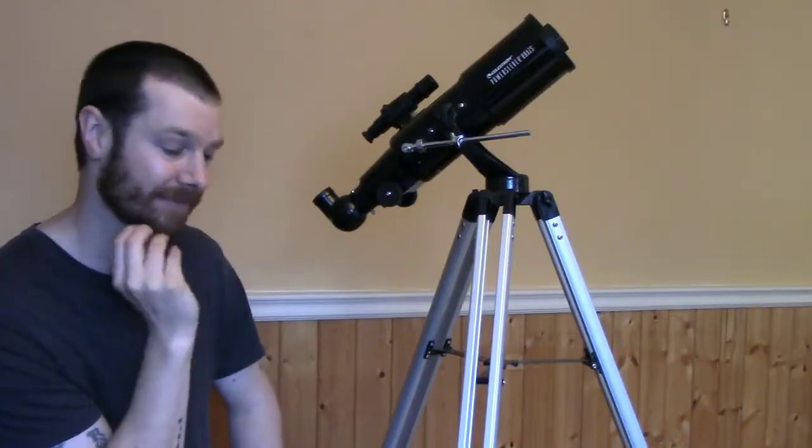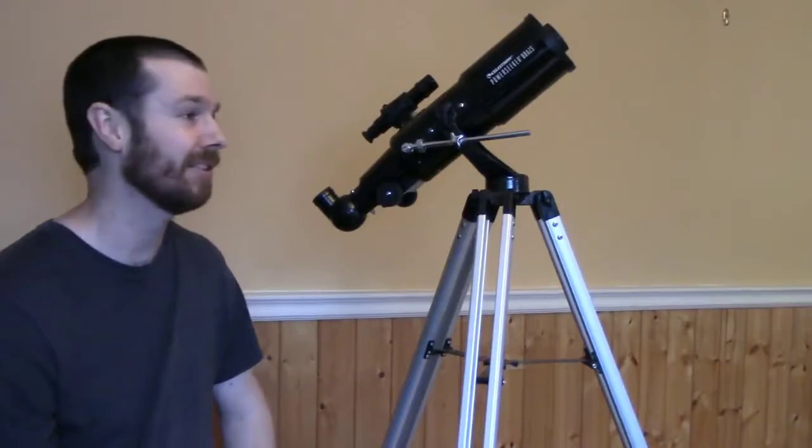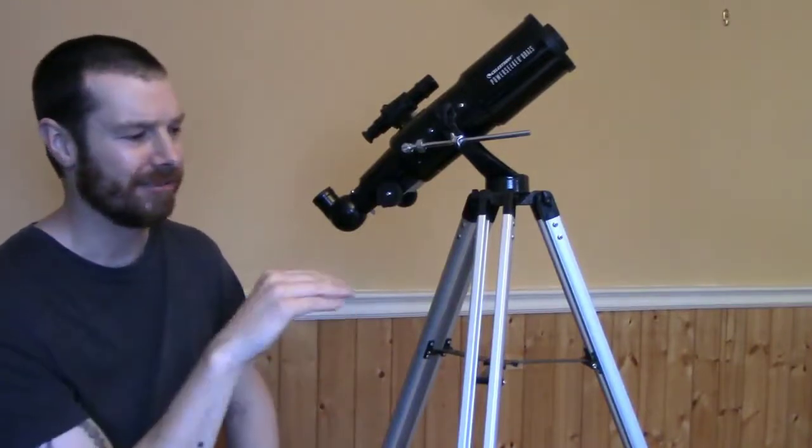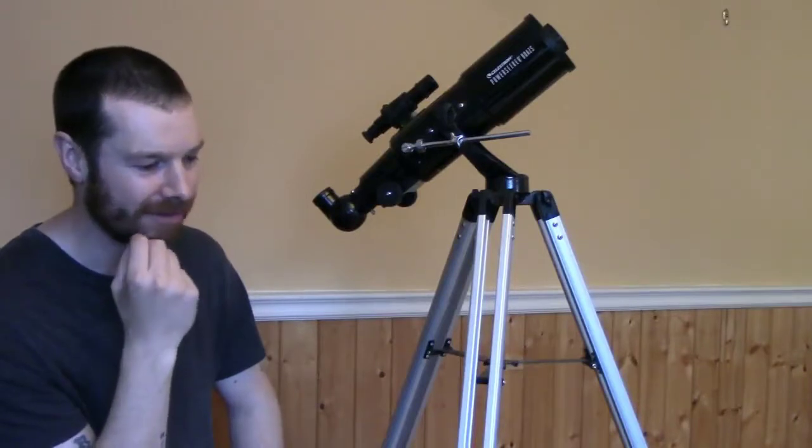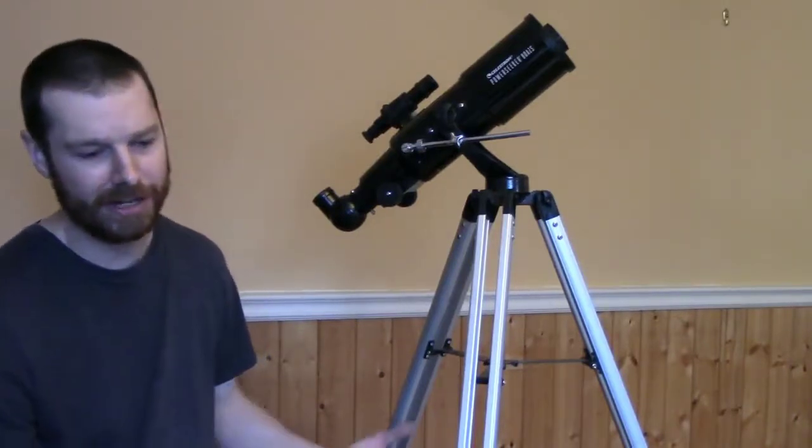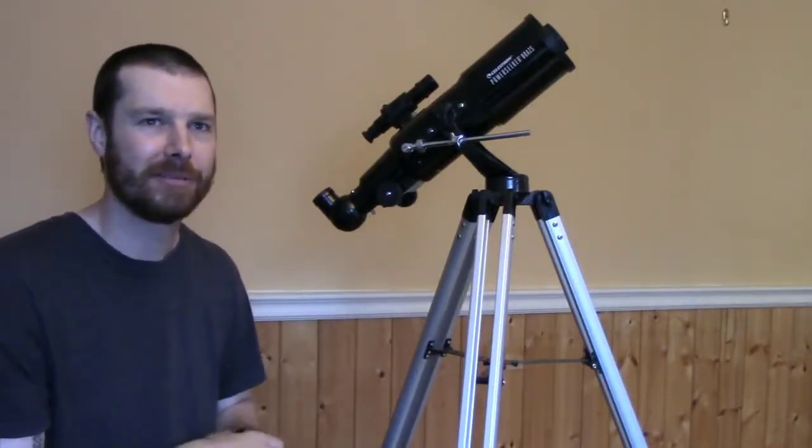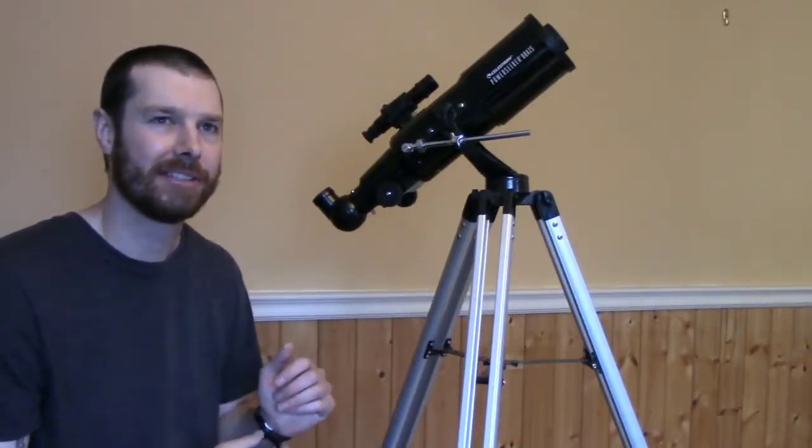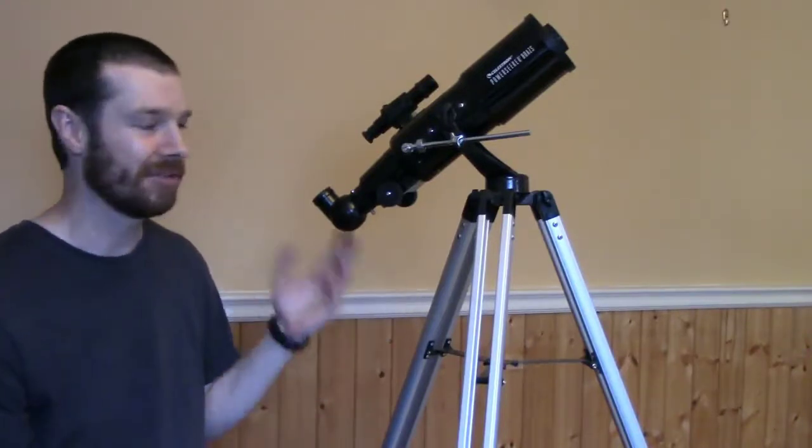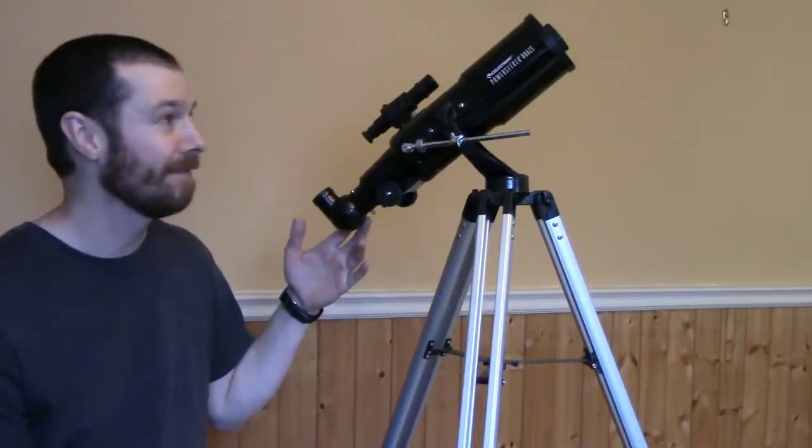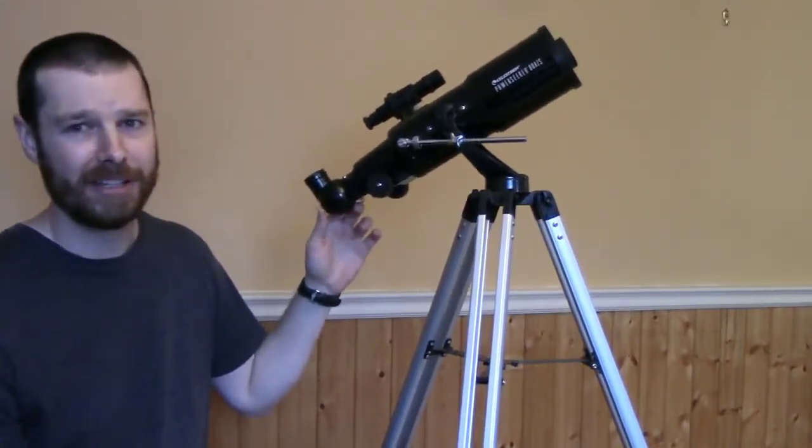you can easily see the rings on Saturn, which is probably one of the coolest things to look at in my opinion. You can view the moon great with it, Orion Nebula, Pleiades, a couple of these different popular things to look at with a beginner scope is all really good. In my opinion, this was my first telescope and I would highly recommend it as a first telescope.